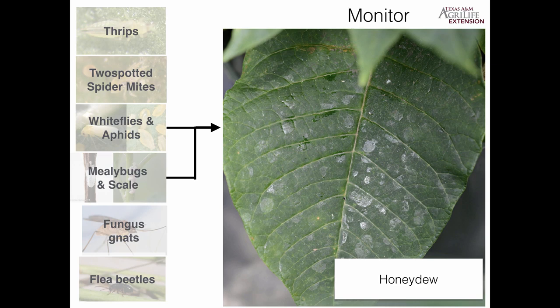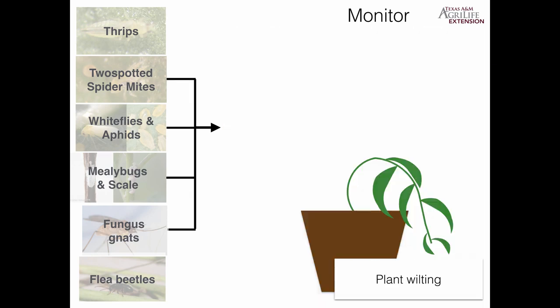If you see that sticky surface on the leaves, that's a sign of honeydew — you've got whiteflies, aphids, or mealybugs on soft scale; armored scale does not produce honeydew. If the plant is wilting and it's not due to watering — it's getting enough water — it could be nutrient deficiency, some kind of plant disease, or something sucking the juices out: a very high population of two-spotted spider mites, whiteflies, aphids, or mealybug and scale. If there's no apparent sign of anything feeding above the plant, take it out of the pot and inspect the roots — you might have fungus gnat larvae or some other root pathogen.